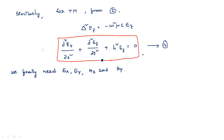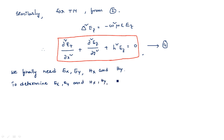So, in order to calculate these four parameters Ex, Ey, Hx, and Hy, we go for Maxwell's first two equations. To determine Ex, Ey, Hx, and Hy, we use Maxwell's first two equations.